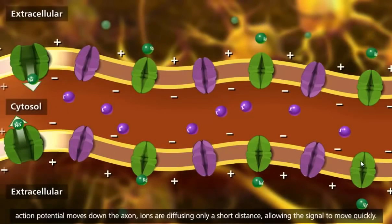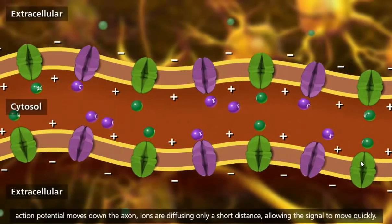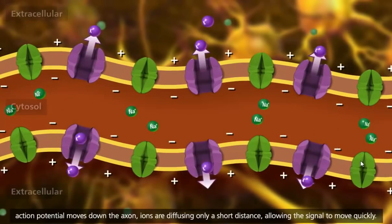As the action potential moves down the axon, ions are diffusing only a short distance, allowing the signal to move quickly.